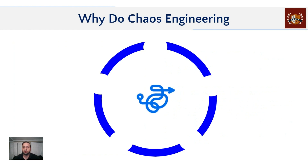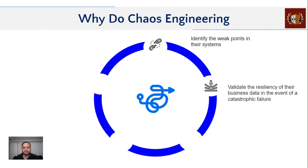Now that we know what chaos engineering is, why do we actually have to practice it in our project? One advantage is to identify the weak points in your system. When everything is working fine you are not really exposing those weak points — you would never really understand where exactly your system breaks. By doing chaos engineering you will be able to identify where those weak points lie, and also to ensure the resiliency of your business data and your product. In case of any catastrophic failures, you would want to know how the system behaves and how business data is processed and handled.